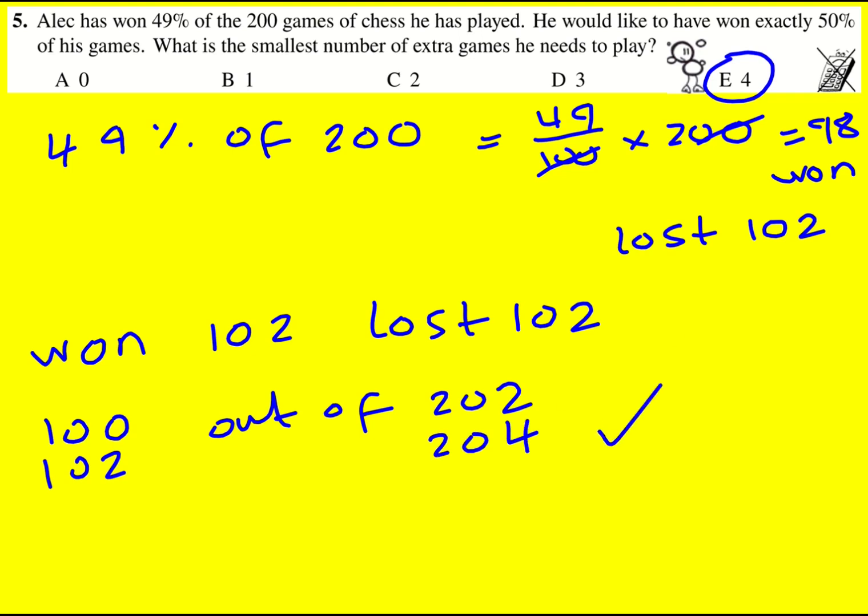And I kind of did it when I did it without trial and error, but using the same sort of approach. So I said, right, 98 is going to have to win an extra X games. And if I divide that by the total number of games played, it's going to be 200 plus X because obviously that gets added on as well.